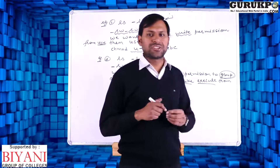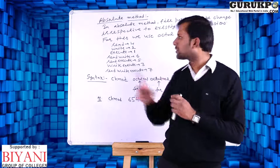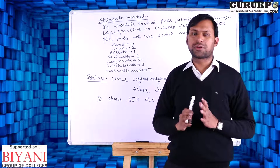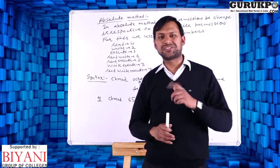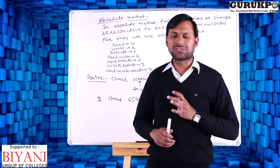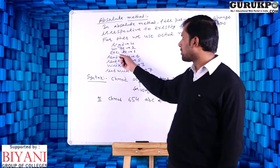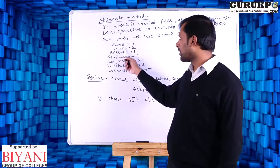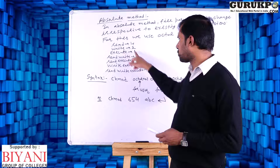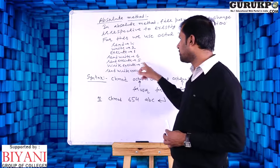Now we will discuss how we can change file permissions using the absolute method. In absolute method, we don't require existing file permissions — we can directly set required file permissions without knowing existing ones. For this we use octal numbers: read is 4, write is 2, execute is 1. Combos: read+write is 6, read+execute is 5, write+execute is 3, all three permissions is 7.